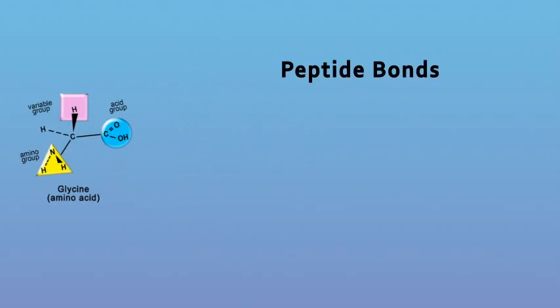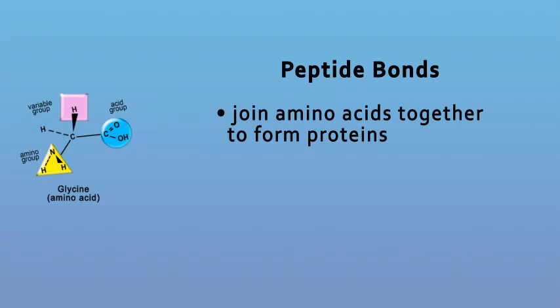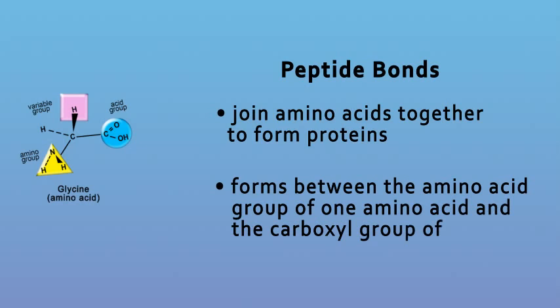Several covalent bonds, called peptide bonds, join amino acids together to form proteins. A peptide bond forms between the amino acid group of one amino acid and the carboxyl group of another.